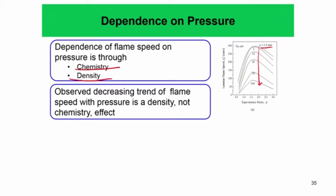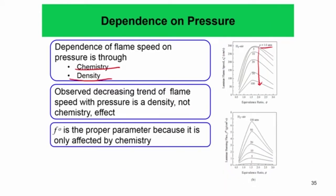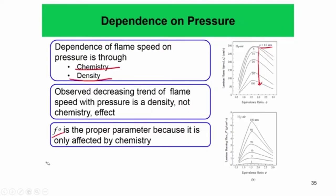If you really want to understand how flame speed depends on pressure, the better quantity to look at is the burning flux F₀ = ρ_u × S_u⁰. This quantity, being a density-weighted flame speed, is only affected by chemistry and not affected by density. If you plot the laminar burning flux with equivalence ratio, you see that with increasing pressure the laminar burning flux at a given equivalence ratio monotonically increases — that is the pure effect of chemistry.